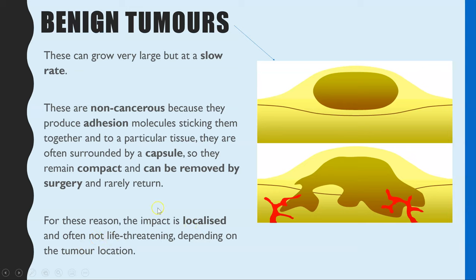Benign tumors are often not life-threatening because they are much easier to remove by surgery and cannot spread. However, it does depend on the location. For example, even if it is a benign tumor, if it is in the brain that is still very dangerous — it is very difficult to remove the tumor without damaging brain tissue, and the tumor puts pressure on the brain against the skull. If it were on the skin, it would not be an issue at all.